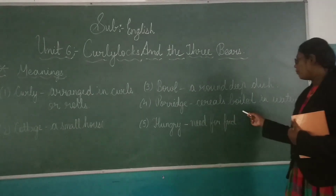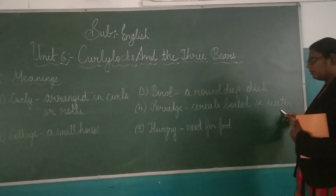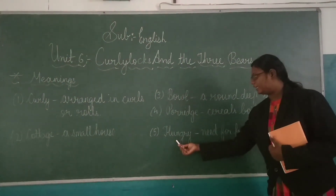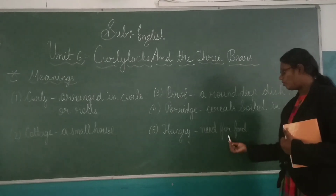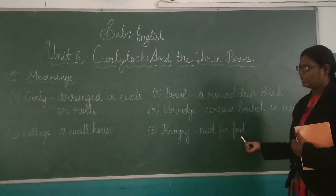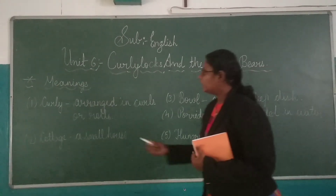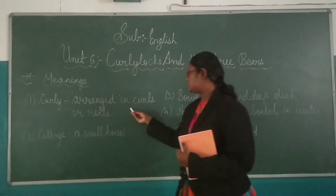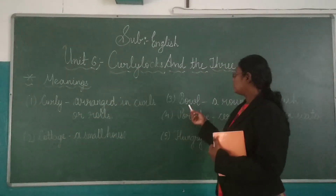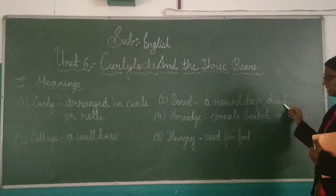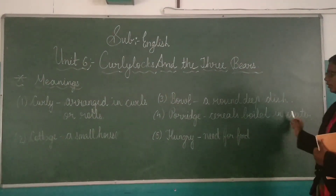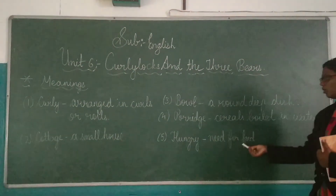Porridge means grain boiled in water. Hungry means need for food. So, once again: Curly — arranged in curls or rows. Cottage — a small house. Bowl — a round dish. Porridge — grain boiled in water. Hungry — need for food.